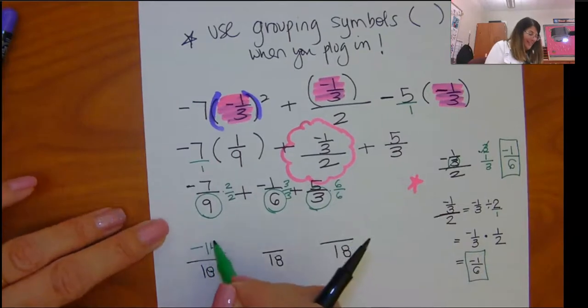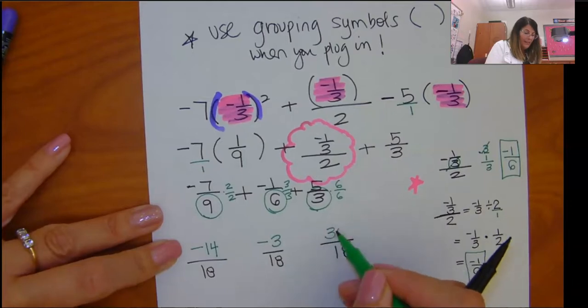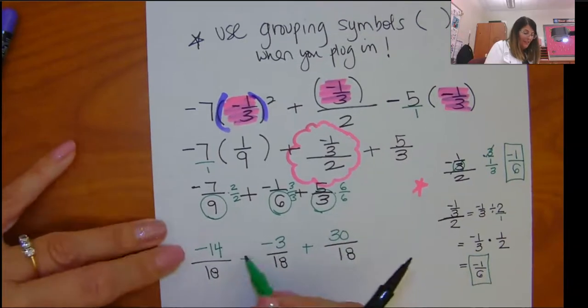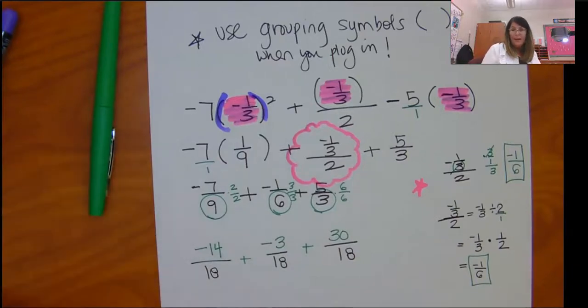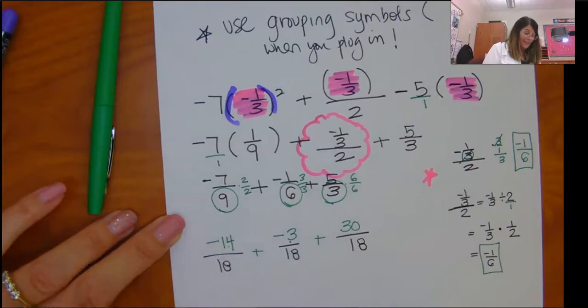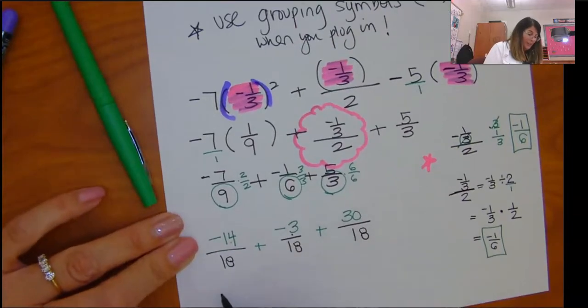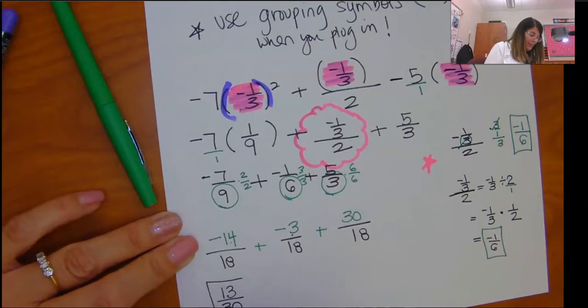This is going to give me negative 14. This is going to give me negative 3. And this is going to give me a positive 30. Now that I have a common denominator, I'm just going to combine these things. So negative 14 and negative 3 is negative 17. Plus 30 is positive 13 eighteenths.